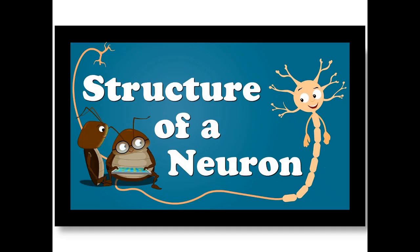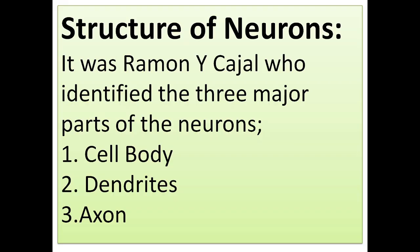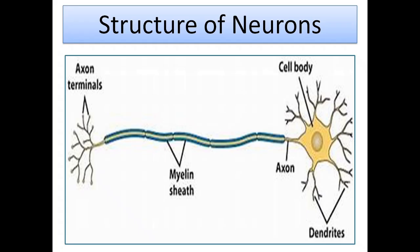Now, what is the structure of a neuron? It was Ramon y Cajal who identified the three major parts of the neuron: the cell body, dendrites, and axons. In this picture you can clearly visualize the structure of a neuron. This part is the cell body of the neuron, this is the axon with the fatty shield called the myelin sheath, these tips are the axon terminals, and these tips are the dendrites.